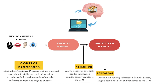Active rehearsal allows the information in the short-term memory to remain active and maintains it there. There are various ways in which rehearsal might occur. One common example is the verbal repetition of information, such as when you're trying to remember a four-digit code by repeating it constantly until you get that piece of information written down or consolidated.